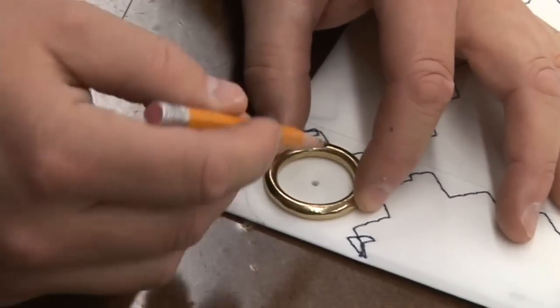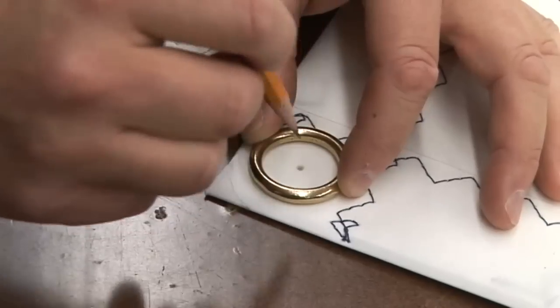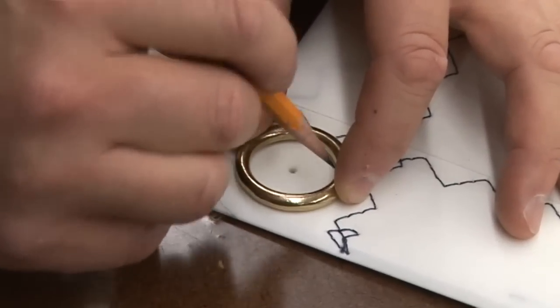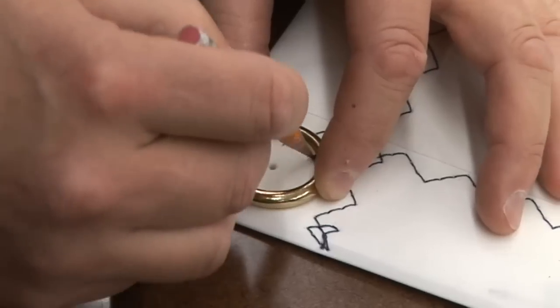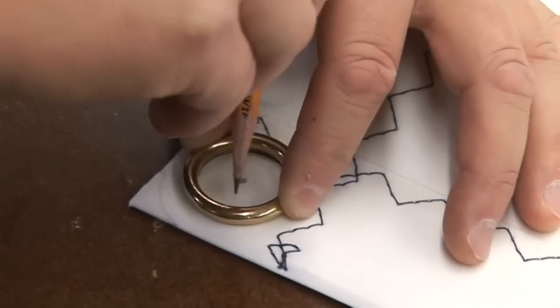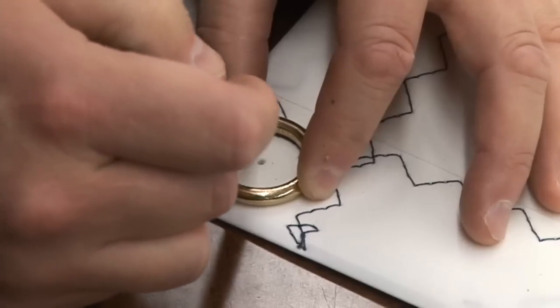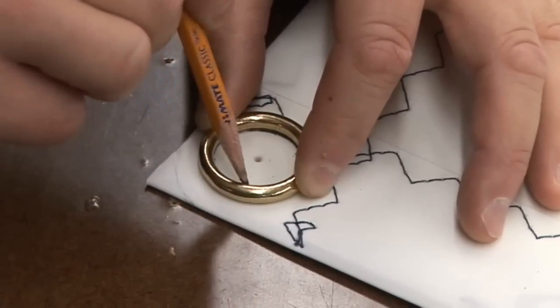Then you want to draw an inner circle, a little bit smaller than the inner diameter of the ring, so hold your pencil at an angle like this. Angle it in because this will give it room for the threads to be in there.